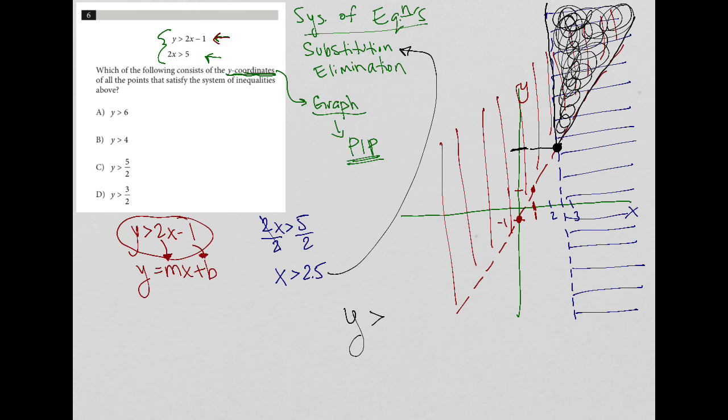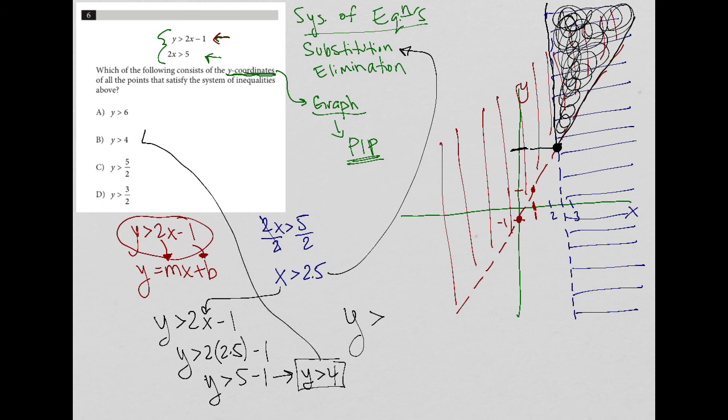I'm going to take y is greater than 2x minus 1 and replace x with 2.5: y is greater than 2 times 2.5 minus 1. That turns into y is greater than 5 minus 1, which is y is greater than 4. Therefore, the correct answer is choice B.